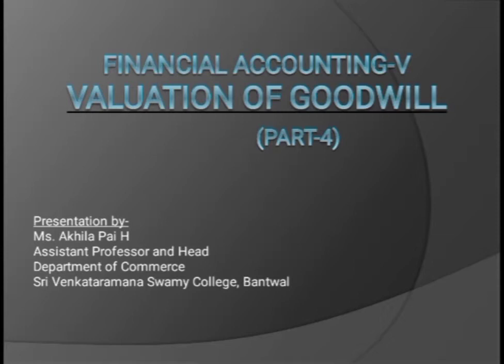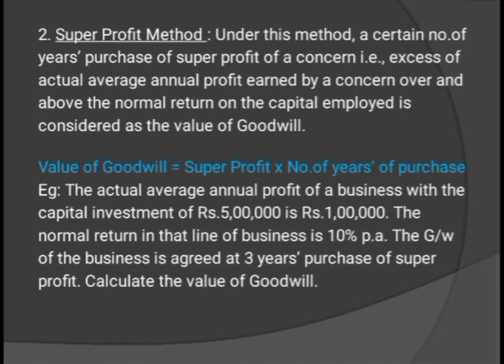Under the super profit method, a certain number of years' purchase of super profit — that is, the excess of actual average annual profit earned by a concern over and above the normal return on capital employed — is considered as the value of goodwill. In the first method, average profit was the base, and the formula was: value of goodwill = average profit × number of years of purchase.